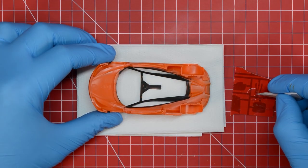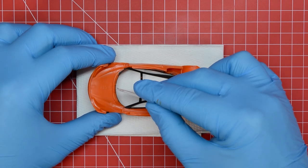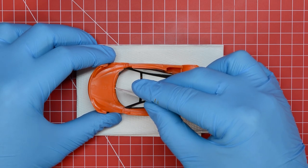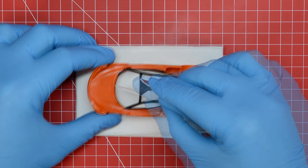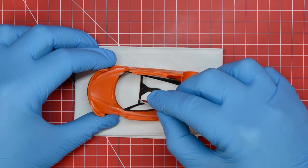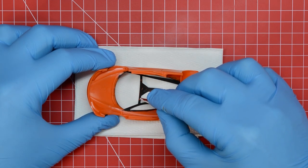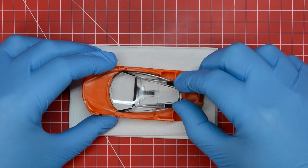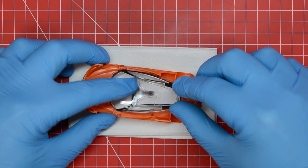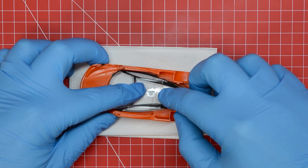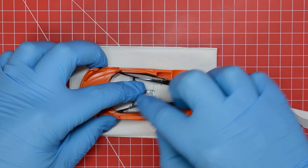We then put some tissue down on the bench to protect the paint on the roof and we added poly cement to the locating points where the tabs on the clear part would fit into place. Once the poly cement was added we carefully maneuvered the glass section into position and then pushed down firmly until we hear the click of the windows locating into the side of the bodywork.